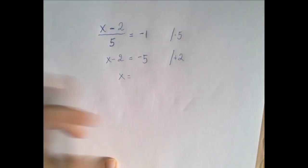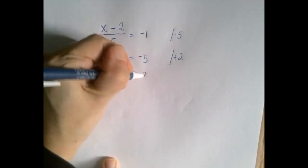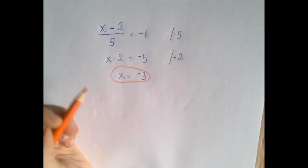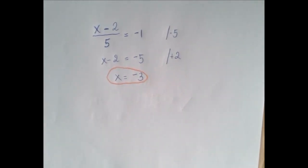So the left-hand side becomes x and negative 5 plus 2 is negative 3. So we think that the solution is negative 3.